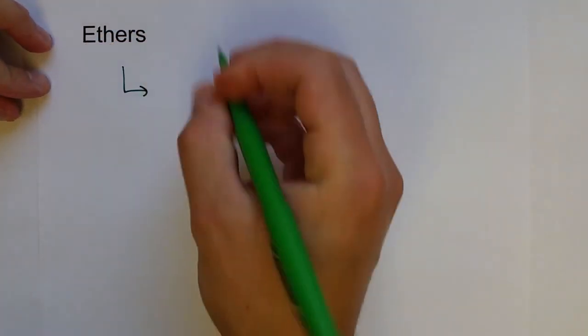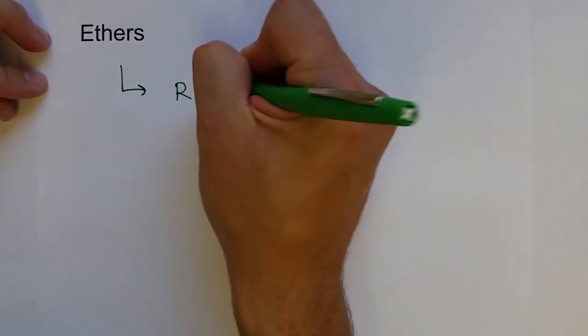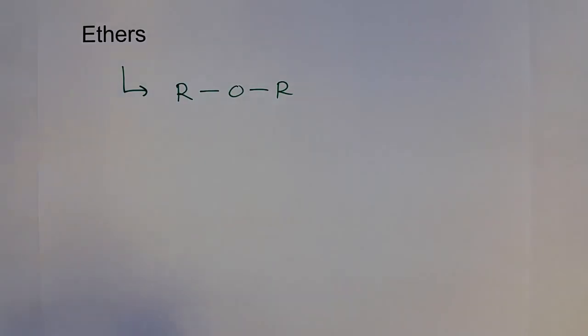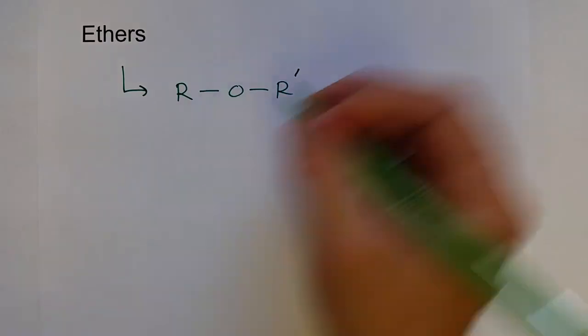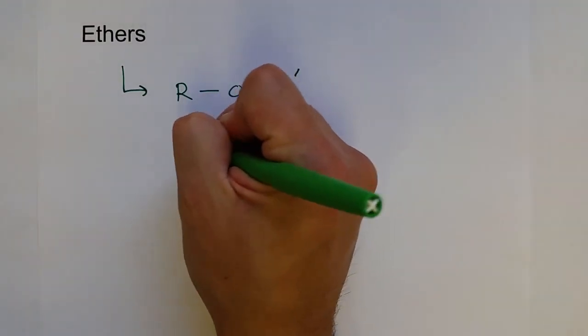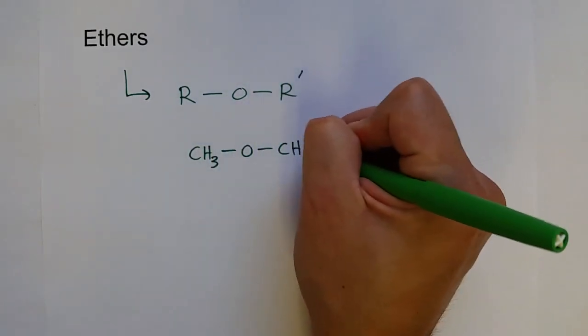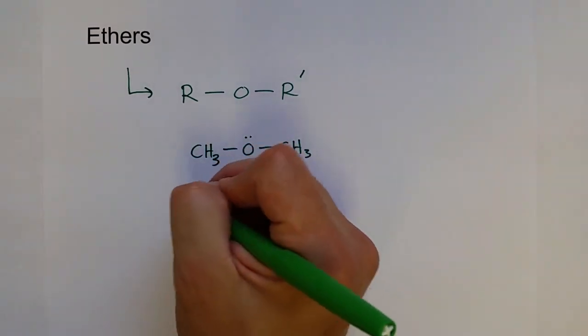Ethers are the functional group when there's an oxygen in the middle of two hydrocarbons. The classic functional group symbol would be R-O-R, where these are two hydrocarbons. Remember the R can be any hydrocarbon, so this can be very simple as CH3-O-CH3.